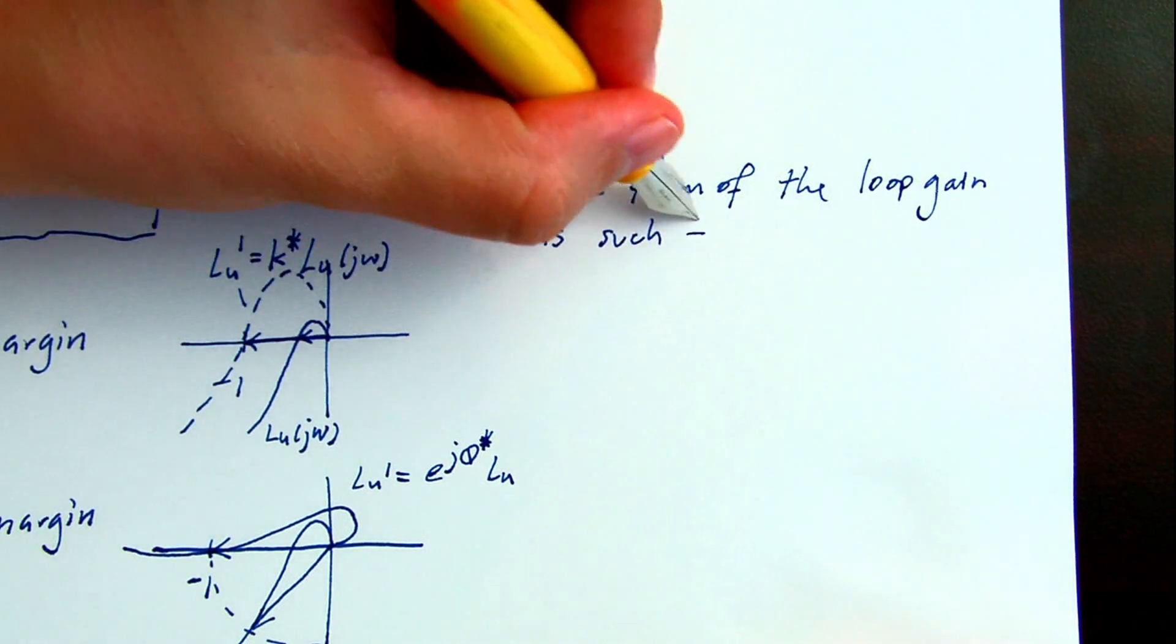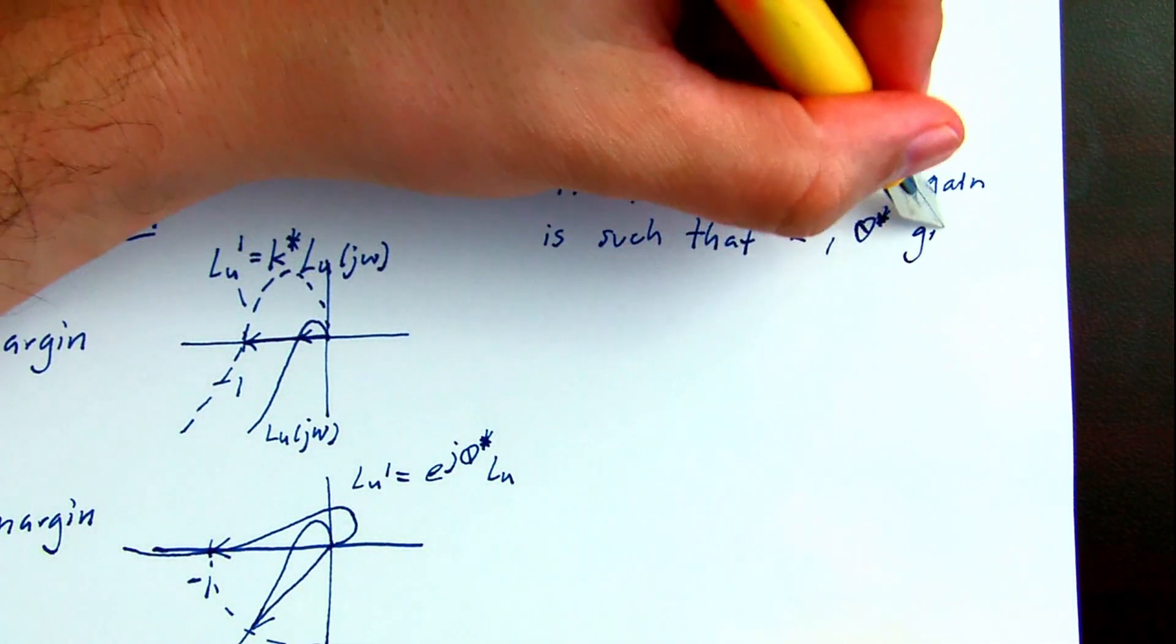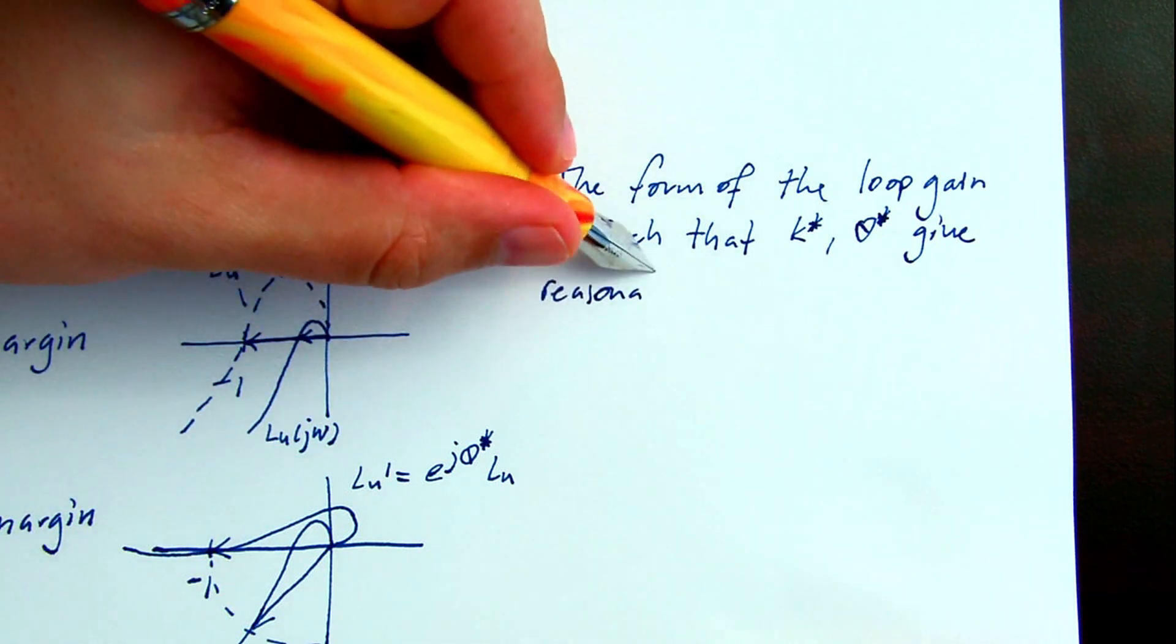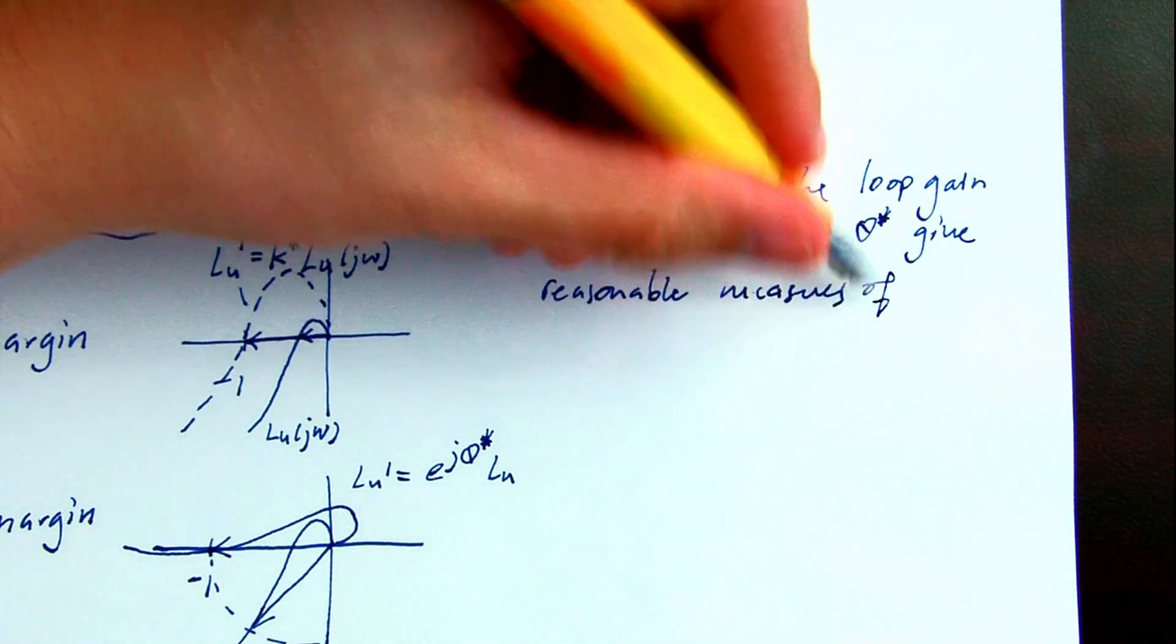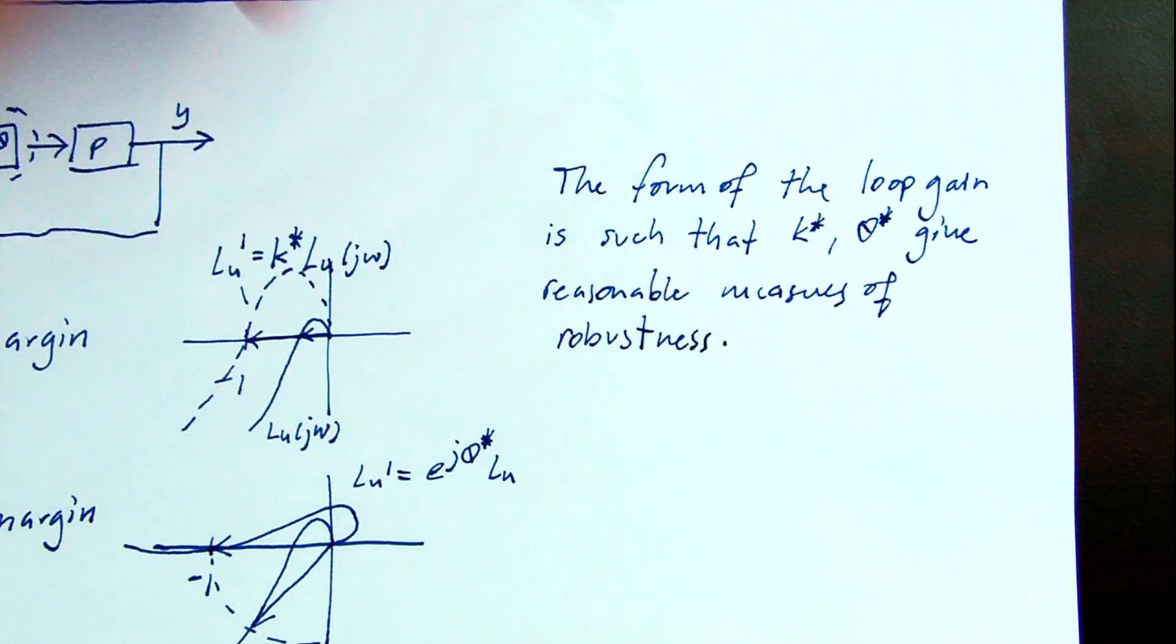In these examples, the form of the loop gain drawn is such that k star and theta star actually give reasonable measures of robustness.